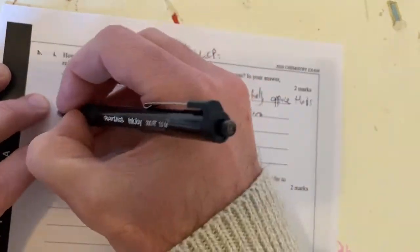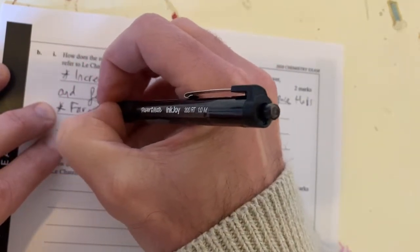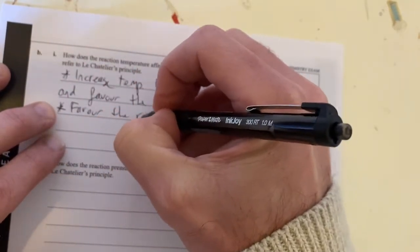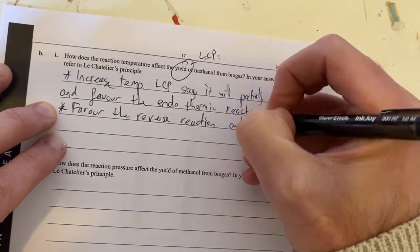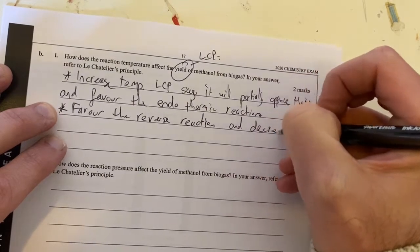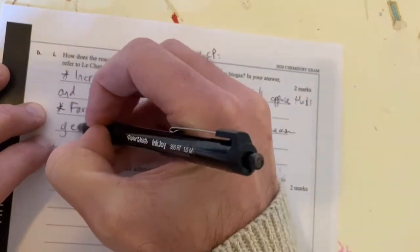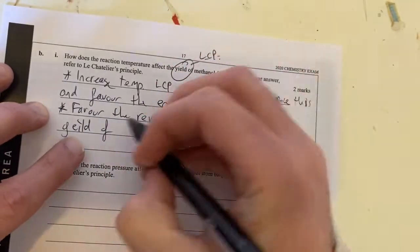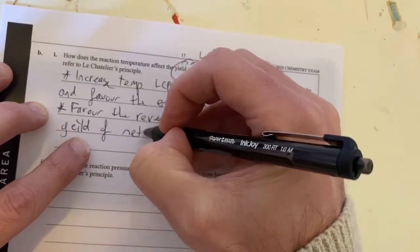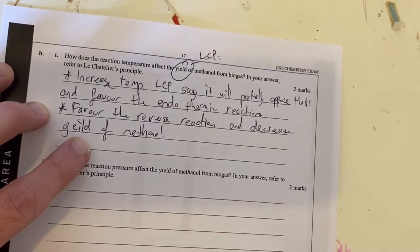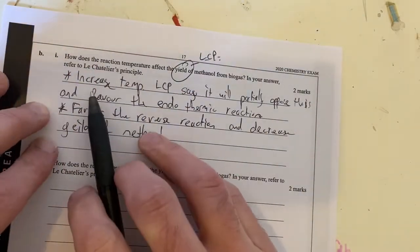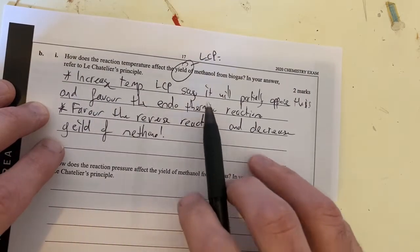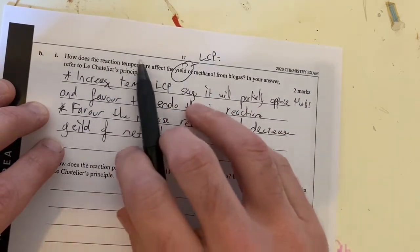So therefore, the endothermic will be the reverse reaction. So therefore, this will be favour the reverse reaction. And it will decrease the yield of methanol. So therefore, this is the idea of Le Chatelier's principle in terms of temperature.